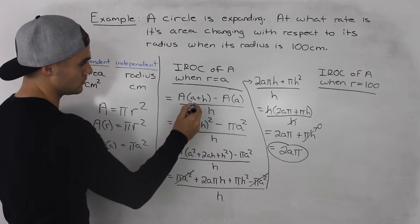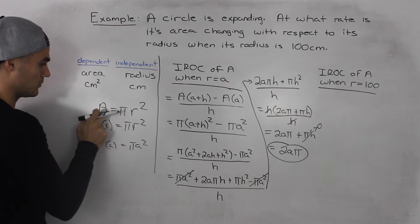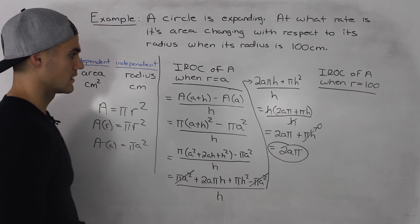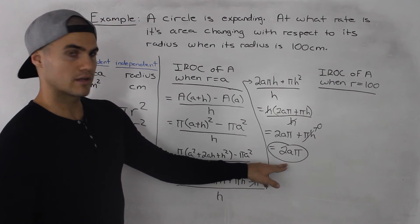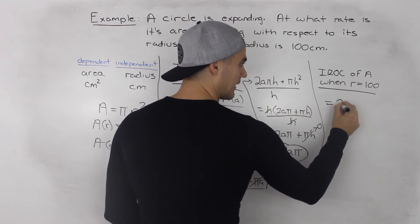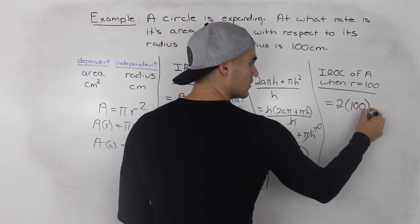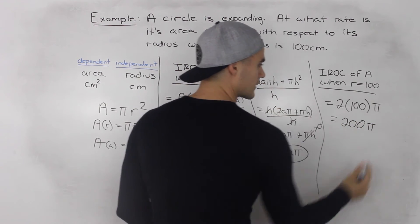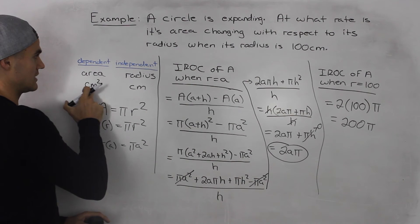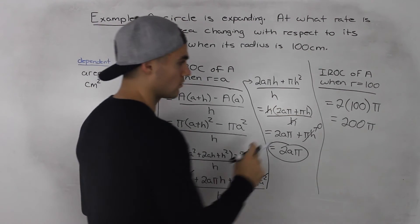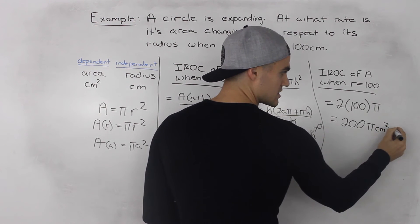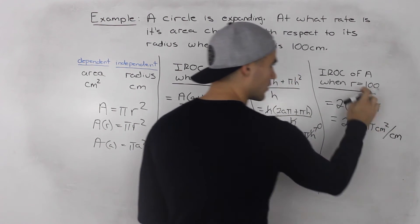Don't confuse capital A and small a: capital A is the dependent variable representing area, and small a is the general value for the radius — they're different. Now that we have the general instantaneous rate of change expression 2aπ, we can find the rate when r equals 100 by plugging in 100 for a. We get 200π. In terms of units, the rate of change of area with respect to radius is 200π centimeters squared per centimeter.